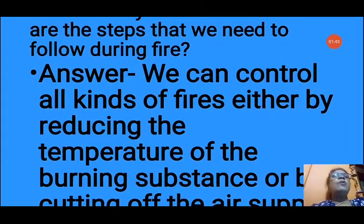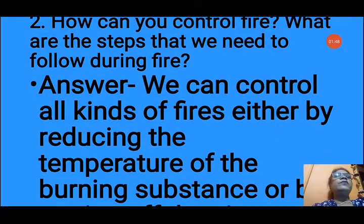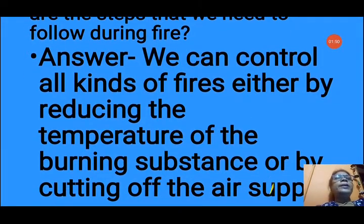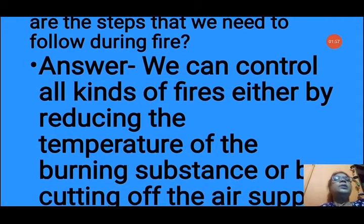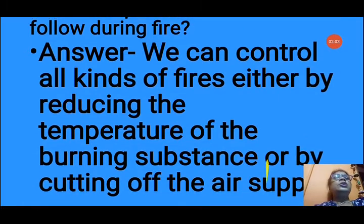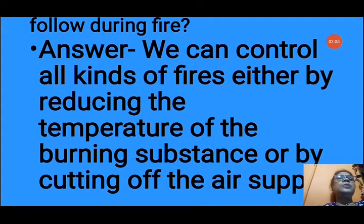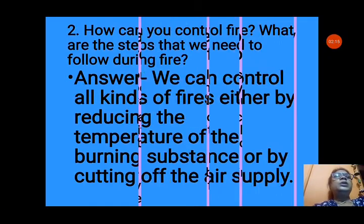Question number 2: How can you control fire? What are the steps we need to follow during fire? We can control all kinds of fires either by reducing the temperature of the burning substance or by cutting off the air supply. Ignition temperature is the temperature at which anything starts burning. When we lower the ignition temperature or cut off the air supply, the fire stops, because without oxygen anything cannot burn.